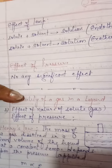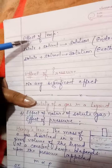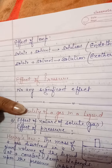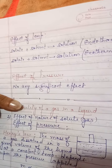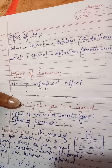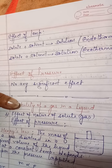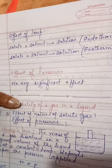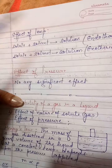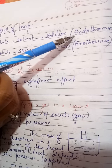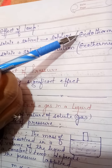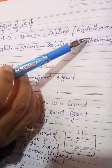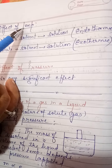The next factor is the effect of temperature on solubility. When we dissolve a solute in a solvent, either heat is released — that is an exothermic reaction — or heat is absorbed — that is an endothermic reaction. There are two types of reactions, and the effect of temperature will be different for each.